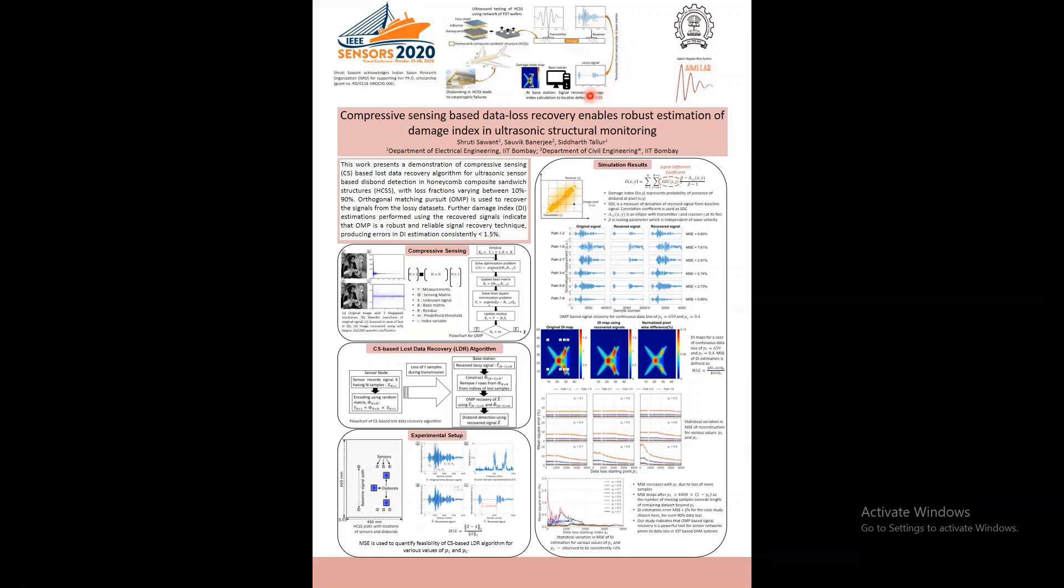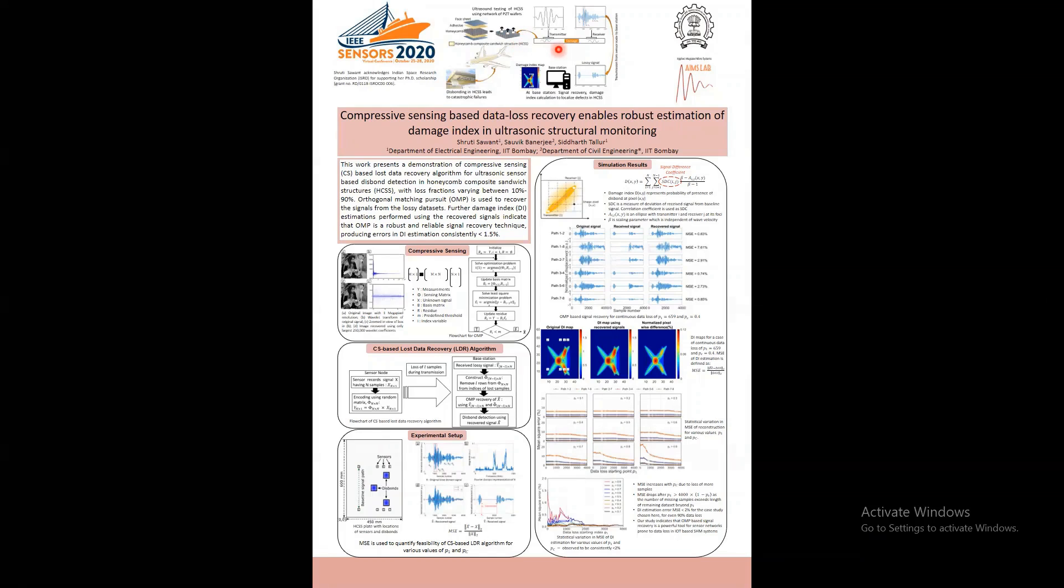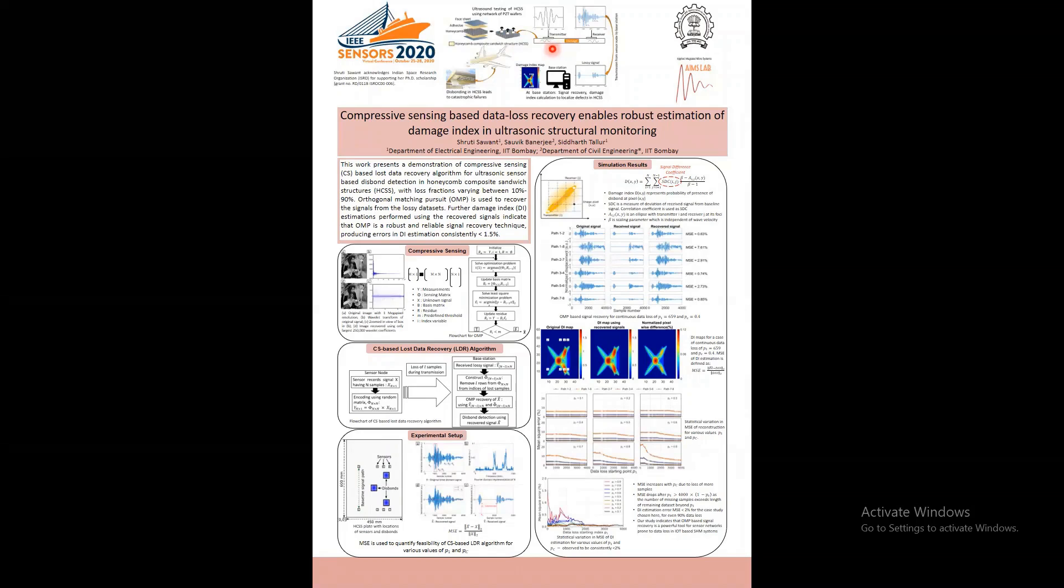This figure illustrates the central idea presented in this work. Honeycomb panels are commonly used in aerospace systems and are susceptible to damage. A network of wireless sensors consisting of PZT wafers is employed to detect the damage. The transmitter PZT on the honeycomb panel is activated using a 5-cycle Hanning pulse. The signal captured at the receiver is then transmitted wirelessly to the base station. During transmission, data loss may occur.